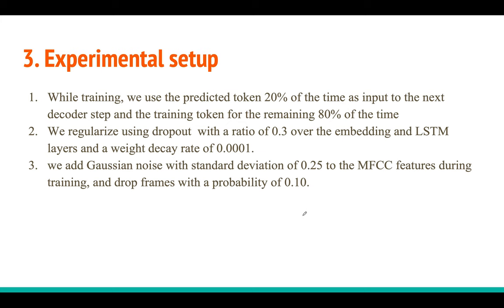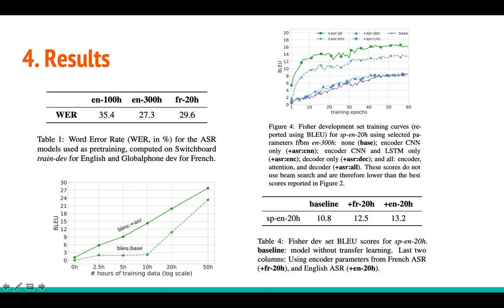During training, they don't use purely ground-truth tokens. Instead, they use 20% predicted tokens along with 80% ground-truth tokens — a form of scheduled sampling — to bridge the gap between training and inference. Regularization is done with dropout, and Gaussian noise is added to MFCC features for robustness.